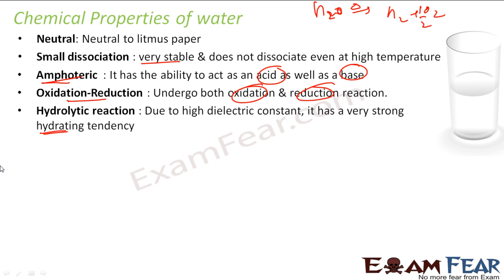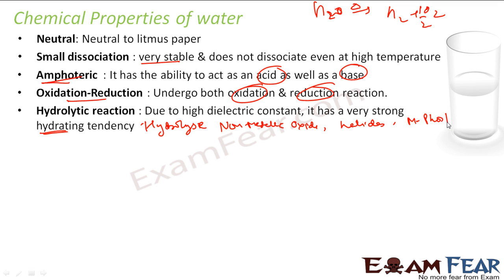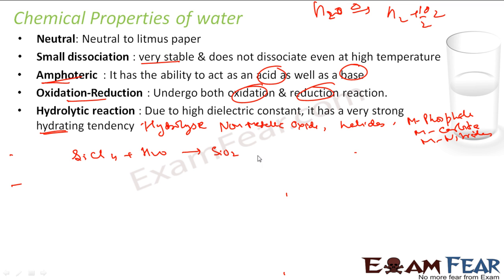Water has a very high hydrating tendency. It can hydrolyze many non-metallic oxides, halides, metallic phosphides, metallic carbides, and metallic nitrides. For example, if we take a non-metallic halide like SiCl4 and react it with water, it gives SiO2 plus hydrochloric acid. You can balance this reaction. So you can hydrolyze non-metallic halides.